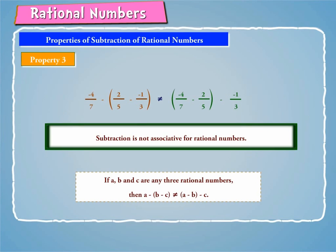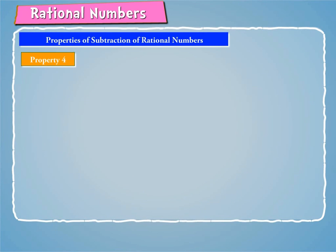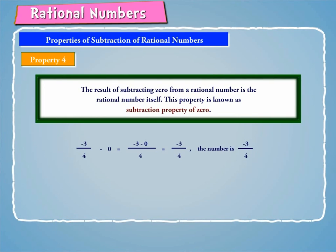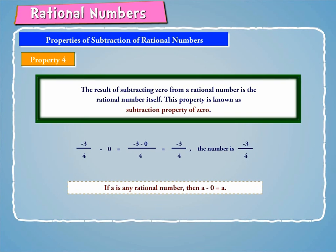Property 4: Let us consider the following example. (−3/4) minus 0 equals (−3 minus 0) by 4, which equals −3/4, the number itself. Hence, the result of subtracting 0 from a rational number is the rational number itself. This property is known as the subtraction property of 0. Thus, if a is any rational number, then a minus 0 equals a. Also, there is no identity element for subtraction in rational numbers.